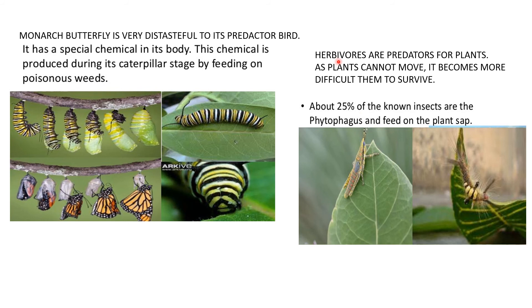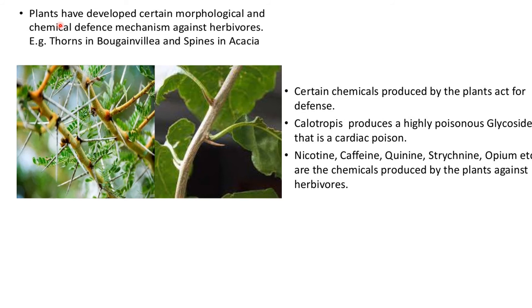Plants also face herbivores — animals or insects that eat plants. Since plants cannot move, survival is more difficult. Plants have developed certain morphological and chemical defense mechanisms against herbivores: thorns and spines prevent animals from eating them. Calotropis produces a highly poisonous glycoside (a cardiac poison) that kills herbivorous animals. Other chemical products include codeine, caffeine, quinine, strychnine, opium, etc., which are released as defense against herbivores.